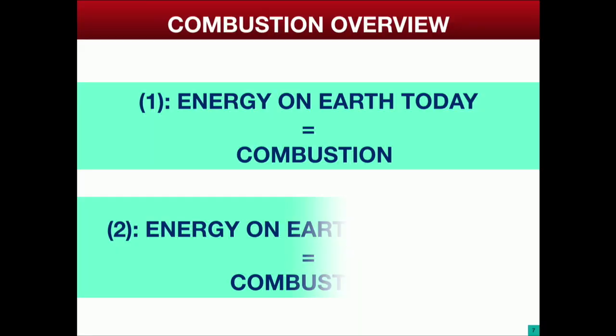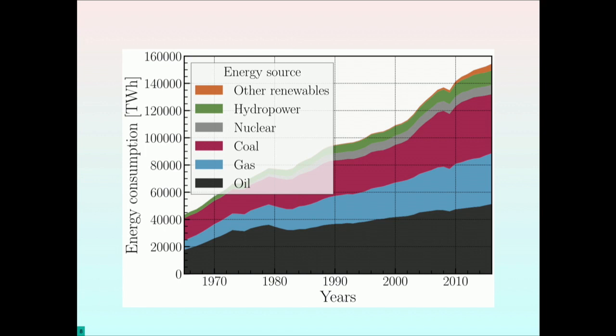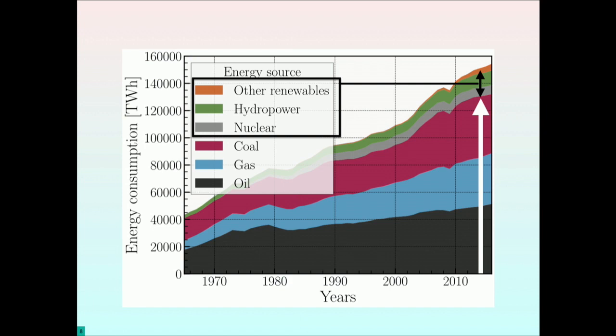The second important equation is that this is not going to change. Tomorrow, combustion will still be there. If you look at the production and consumption of energy on Earth, you see that all of this is combustion — here at 2018. The rest, what's on top, is renewables. This curve should go down, but it is going up. That's something we have a lot of difficulty to avoid, especially when people like Trump tell you that you don't need to diminish it.